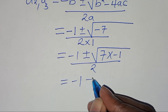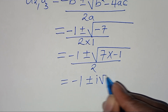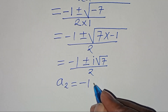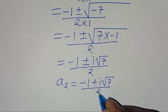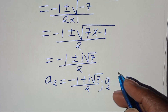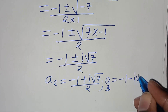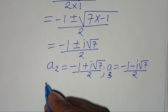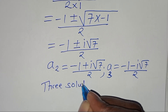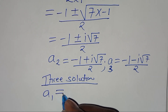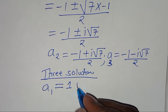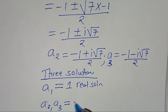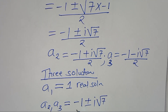So this is the same thing as minus 1 plus or minus i times the square root of 7, divided by 2. This implies a₂ equals minus 1 plus i·√7, divided by 2, and a₃ equals minus 1 minus i·√7, divided by 2. So these are 2 complex solutions, and therefore we have 3 solutions total: a₁ equals 1, which is a real solution, and a₂ and a₃ equal minus 1 plus or minus i·√7, divided by 2.